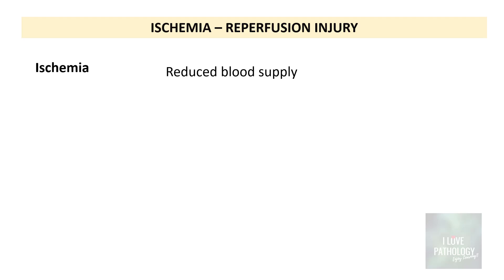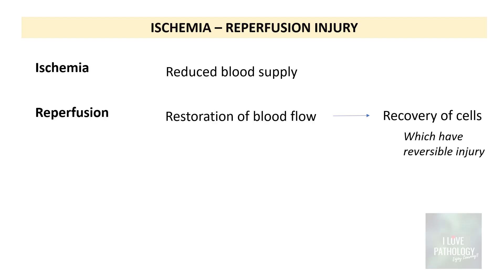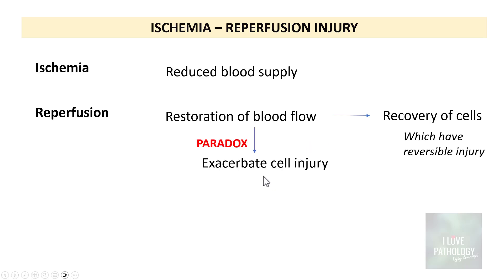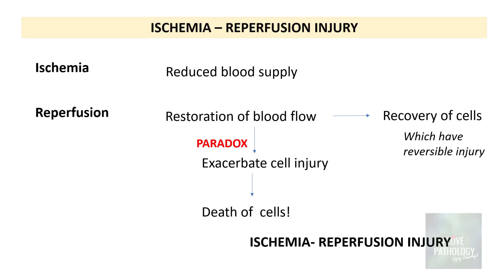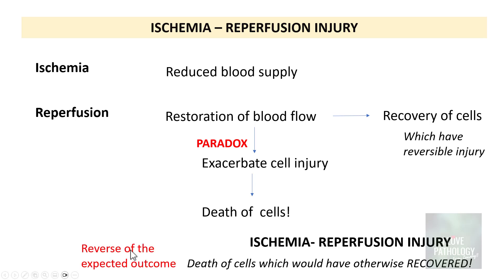What is ischemia reperfusion injury? Ischemia means reduced blood supply to a particular organ. In this case, whenever there is a blockage of the coronary artery, there will be reduction in the blood supply to the myocardium. Reperfusion means restoration of the blood flow, which should basically lead to recovery of cells with reversible injury. But paradoxically, it can sometimes exacerbate cell injury — instead of recovery, the cell injury gets exacerbated, resulting in death of these cells. This is referred to as ischemia reperfusion injury — injury because of reperfusion in the ischemic tissue. There is a reversal of the expected outcome: the expected outcome is recovery of cells, but what happens is death of cells which would have otherwise recovered.